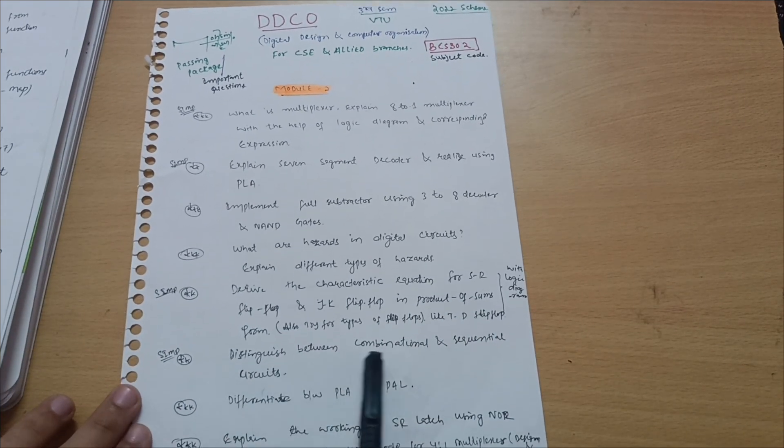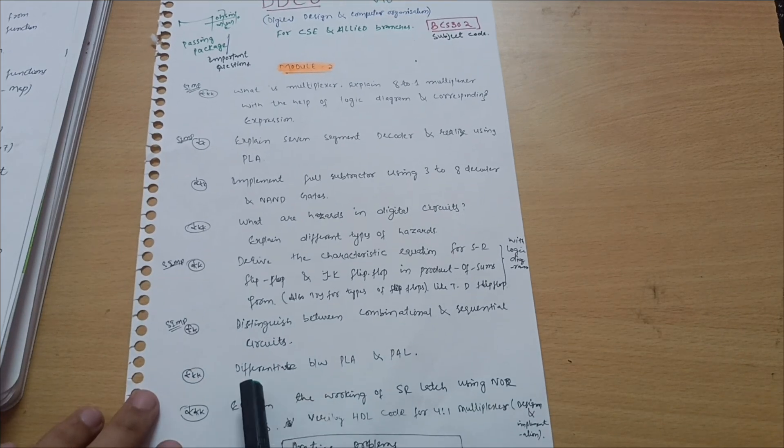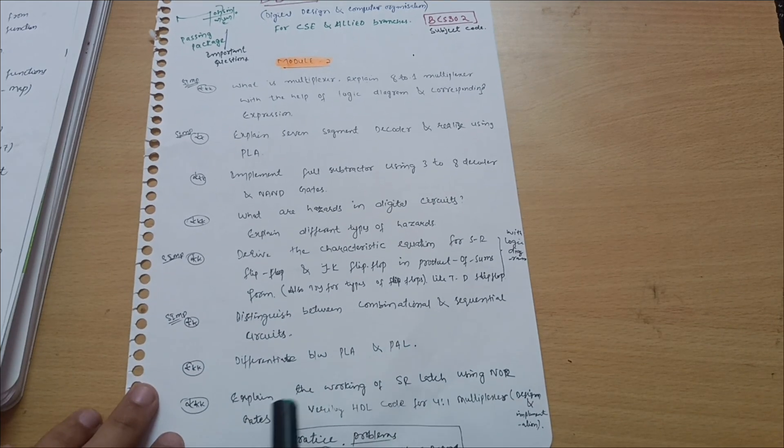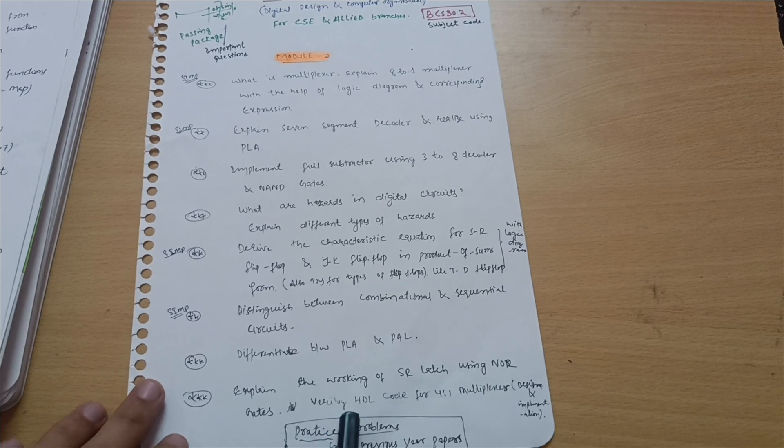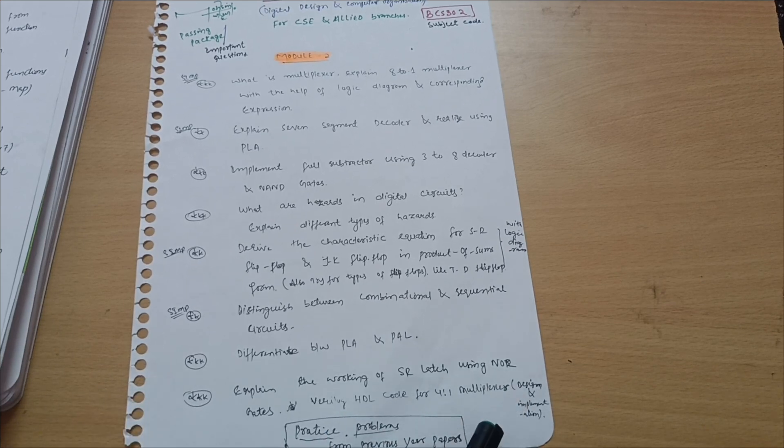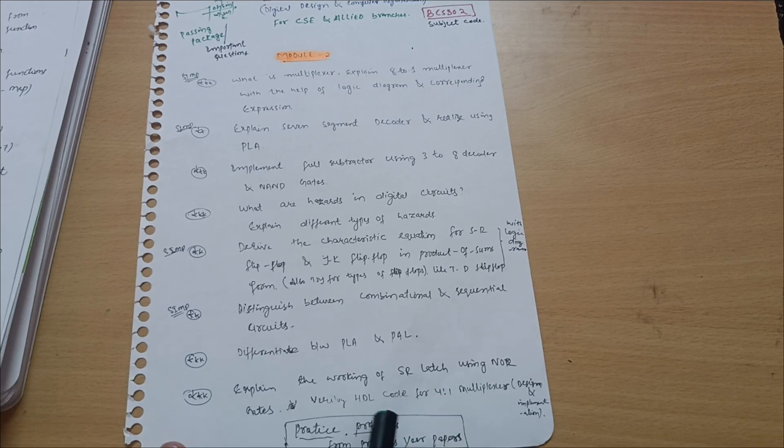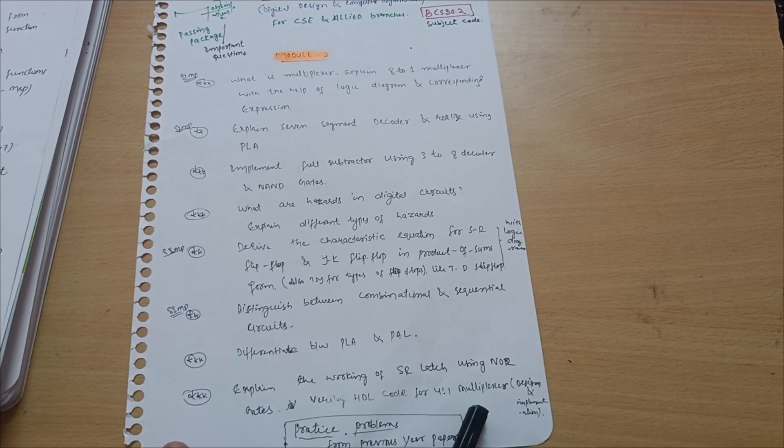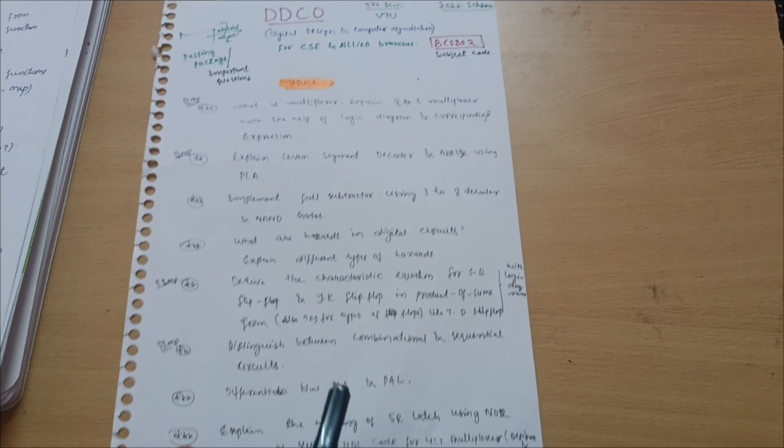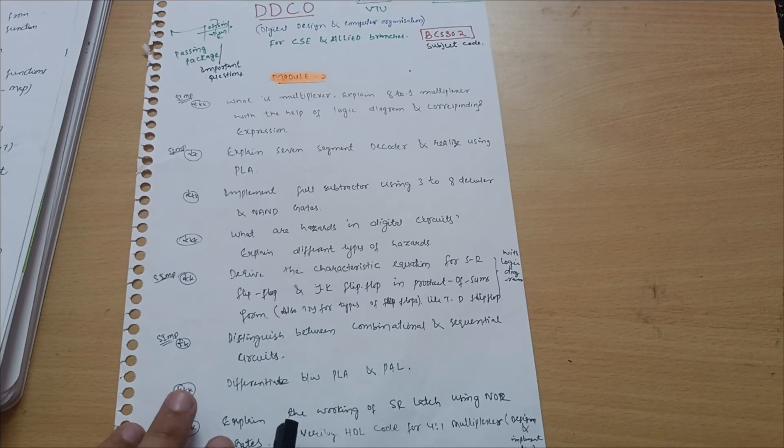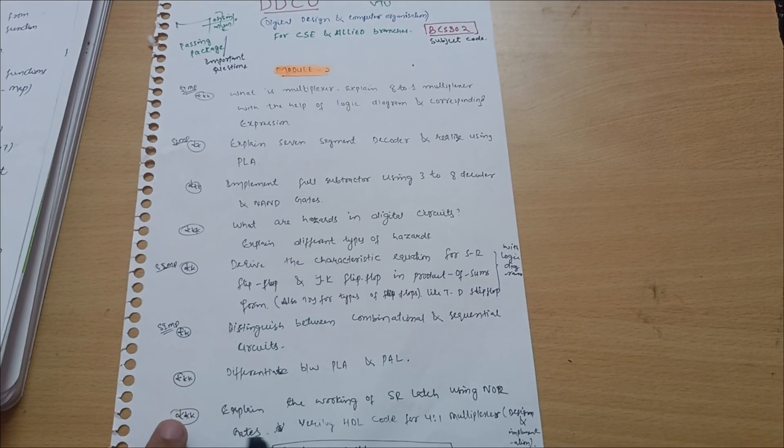Distinguish between combinational and sequential circuits - it is again a super important question. Differentiate between PLA and PAL. Explain the working of SR latch using NOR gates. Verilog HDL code for four is to one multiplexer - you should go through its design and implementation. Also you have to practice problems, as I earlier mentioned. This I didn't consider in the passing module, but if you have to cover the all syllabus then you should go through various types of problems or numericals from the previous year papers.